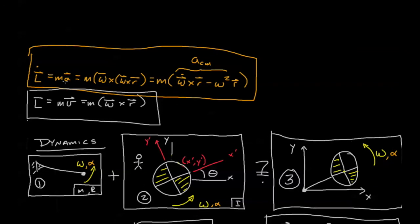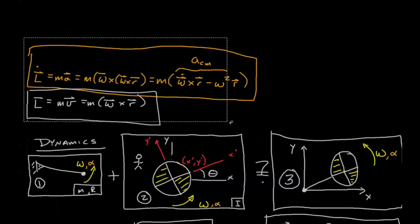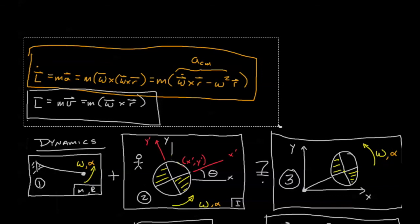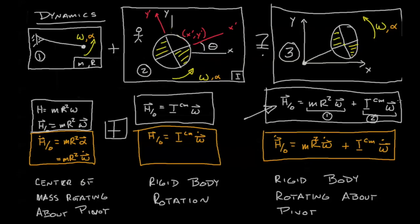We can bring these equations together to have a full list of equations valid for a rigid body rotating about a pivot. In summary, by reviewing two basic scenarios representing rotating bodies — first, the center of mass rotating about a pivot, and second, rigid body rotation — we can combine those two to develop a complete understanding of rigid body rotation about a pivot.